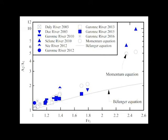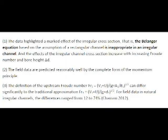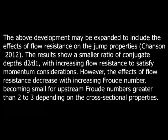The B' equation for a rectangular channel is shown as the solid line. First, the data show a marked effect of the irregular cross-section — the B' equation based upon the assumption of a rectangular channel is inappropriate for an irregular channel. Secondly, the field data are predicted reasonably well by the complete form of the momentum principle. Third, the definition of the Froude number can differ quite substantially from the traditional approximation V over square root of gd. For field data in natural irregular channels, the difference may run from 12 to 75%.